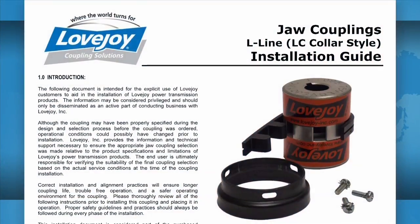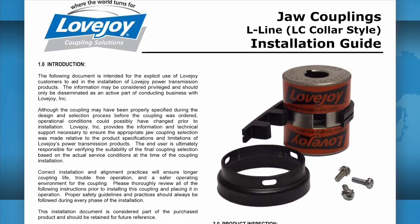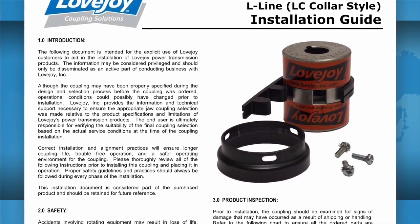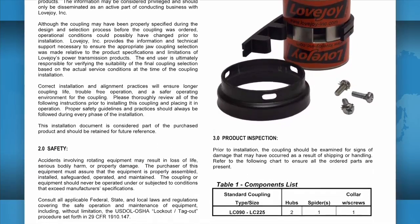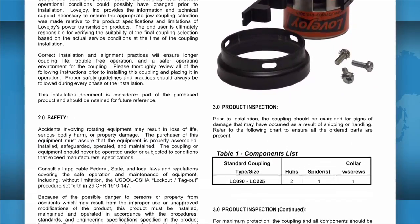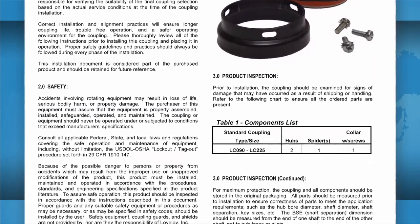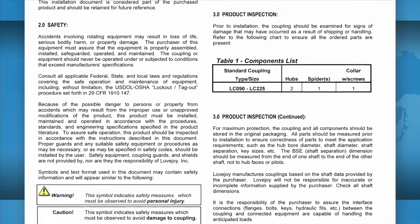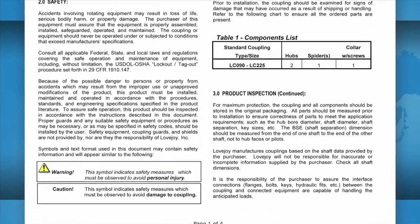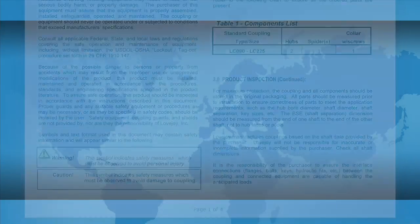It is always recommended to keep a copy of the jaw coupling installation guide readily available when installing a jaw coupling. This guide contains charts that show the allowable coupling misalignment and the torque settings for tightening the set screws. Some installation guides also contain performance and dimensional information important when confirming the coupling selection.